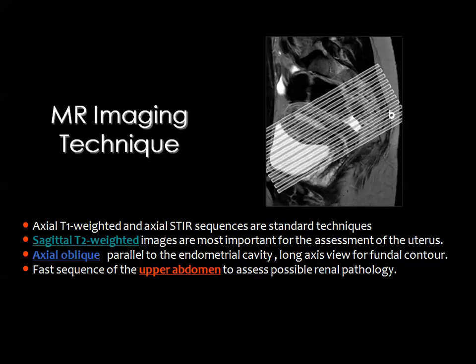One of the important pulse sequences which should never be omitted in examination of the female pelvis is the sagittal T2-weighted image. This is very important to assess uterine anatomy and most uterine pathology, especially when evaluating zonal anatomy and endometrial pathology. Many radiologists also prefer axial oblique images obtained perpendicular to the axis of the uterine body.